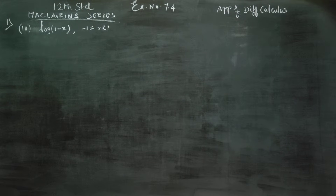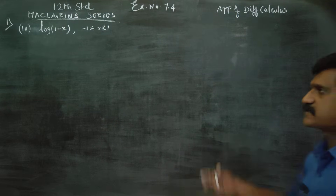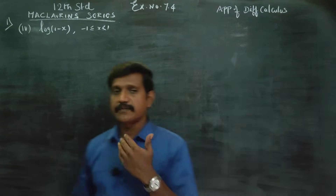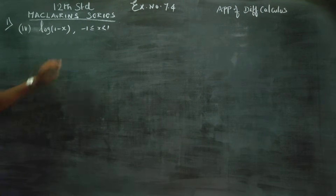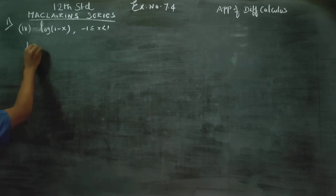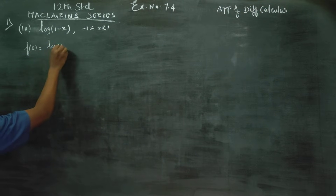Dear 12th standard students, in exercise number 7.4, sum number 1, fourth sub-question, you have to expand log(1-x) using Maclaurin series expansion. You have to write the expansion of log(1-x). First of all, you have to name the function as f of x. So f(x) is equal to logarithm of (1 minus x).